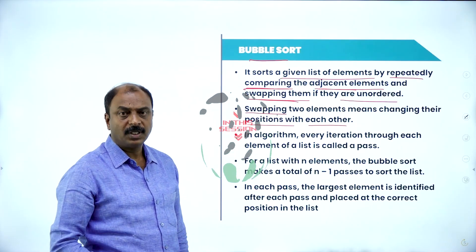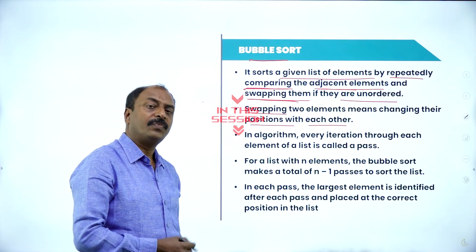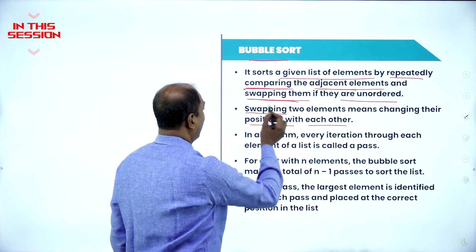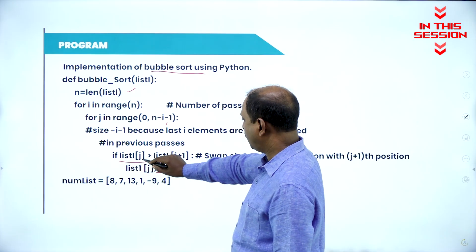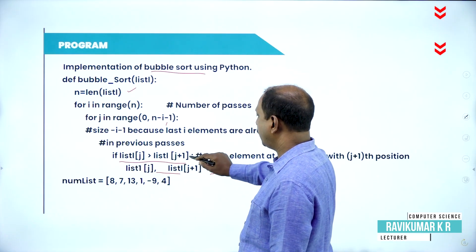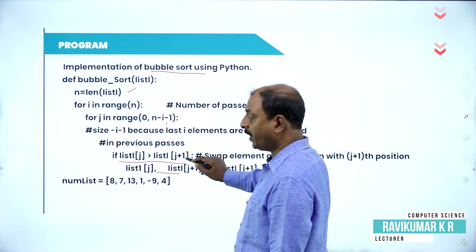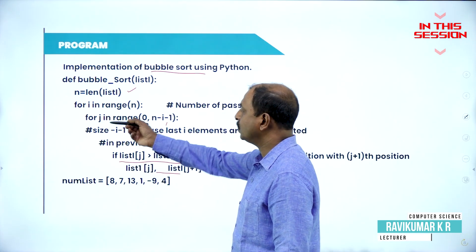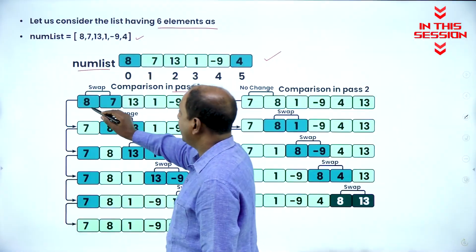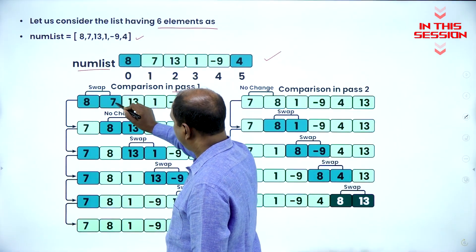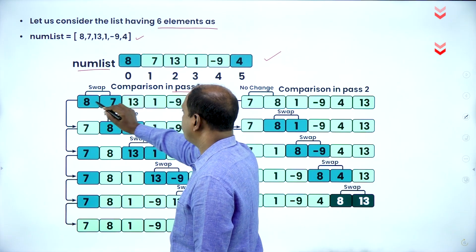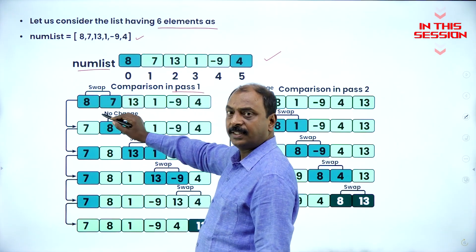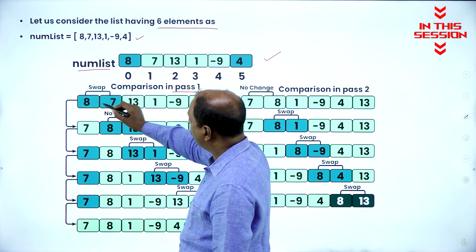Interchange of two numbers, or interchange of elements in a given list, that is the swapping. If j is not greater than j plus 1, then it is going to skip the statement and goes to the next iteration. So 8 is greater than 7, it has to be swapped — that is the meaning of unordered.